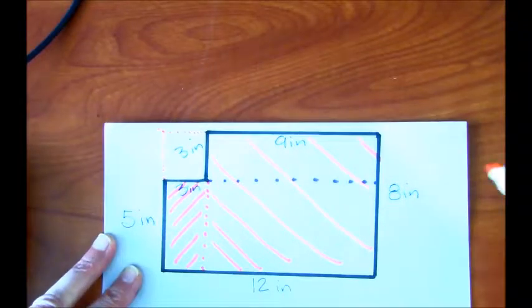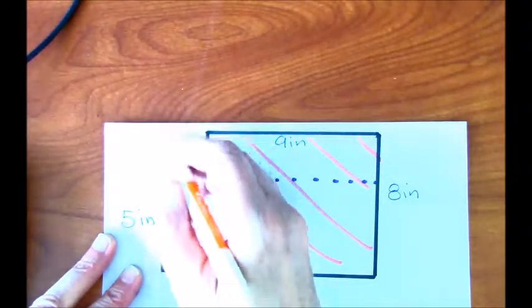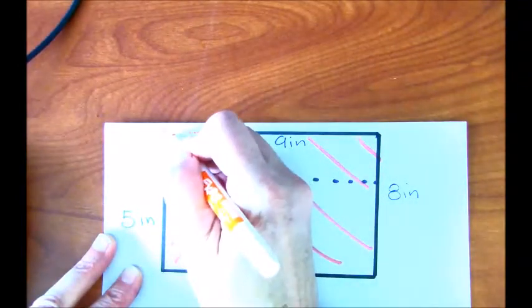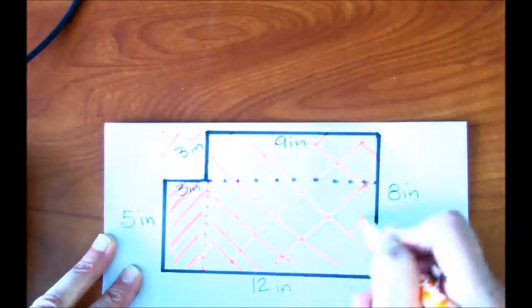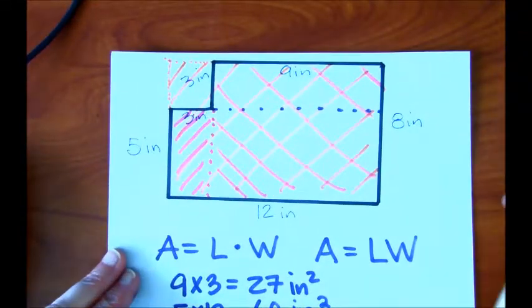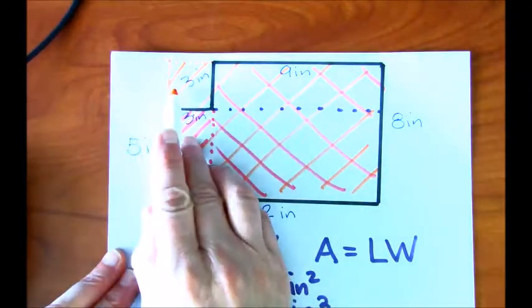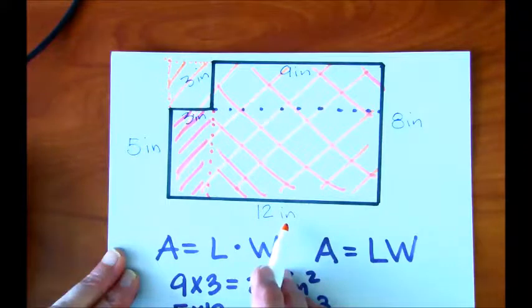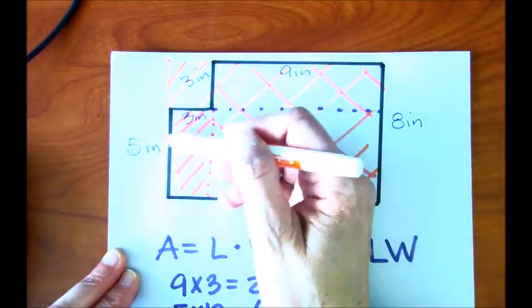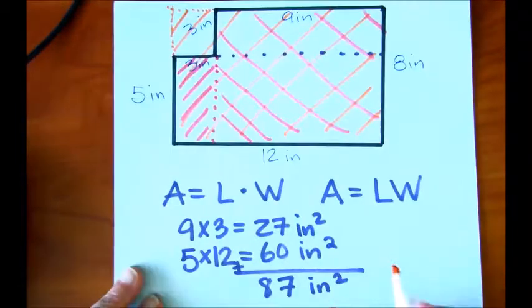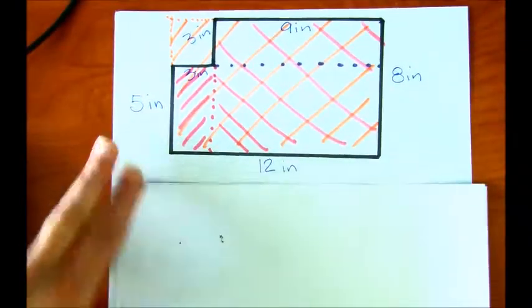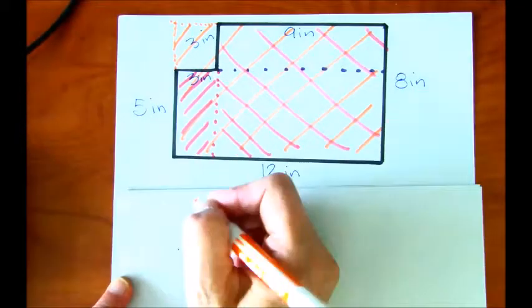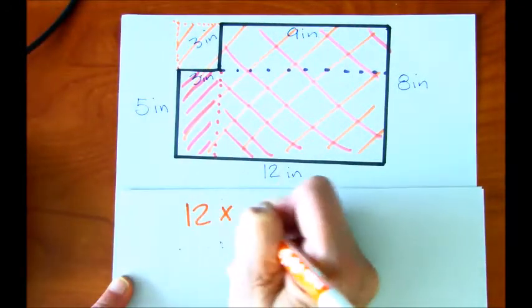Now, we could think of this area as the one big rectangle. We could basically say, what is the area of this whole rectangle? If we want to do that, we can say, notice that 3 plus 9 is 12, which is what we have here. And 3 plus 5 is 8, which is what we have here. So our total area is going to be 12 times 8.